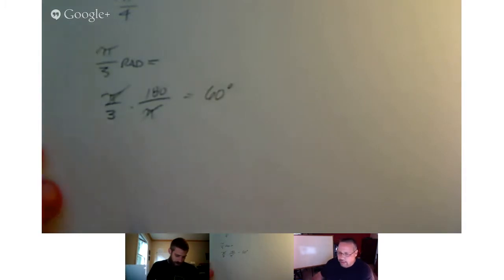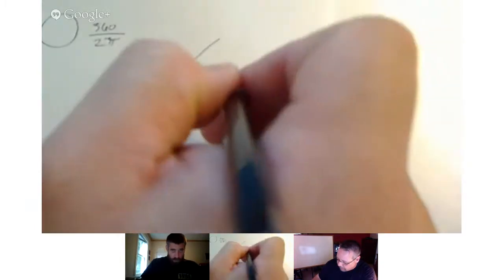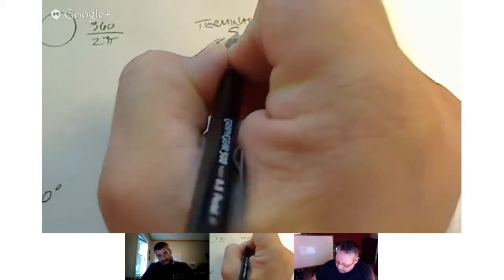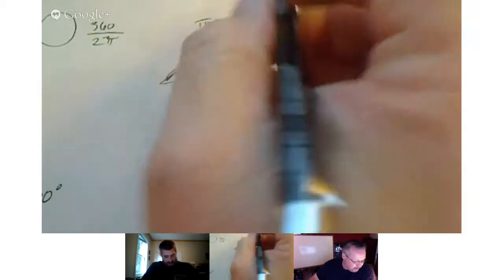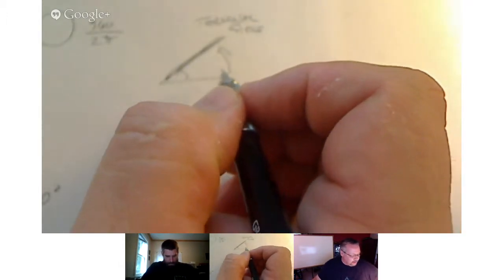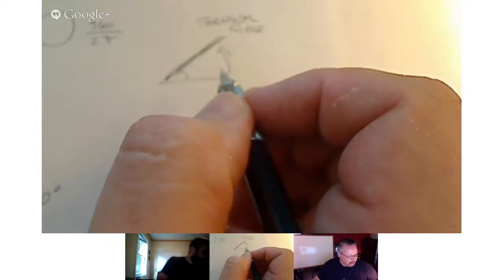What about co-terminal angles? We had some vocabulary at the very beginning dealing with angles. We're assuming the angle goes in this direction. We have this part right here — do you remember what that line was called? It's called the terminal side, and it's the hypotenuse of the triangle. Is that right underneath the section on converting from degrees to radians and radians to degrees?